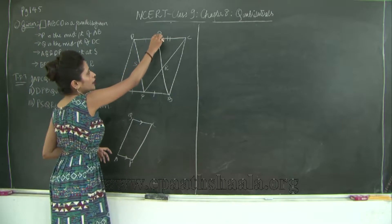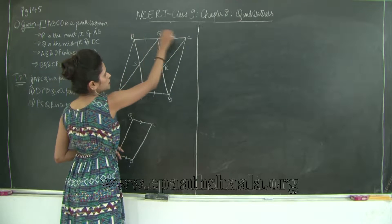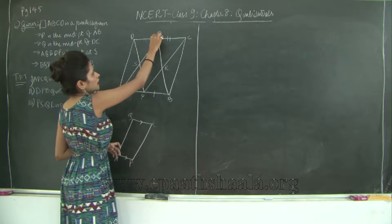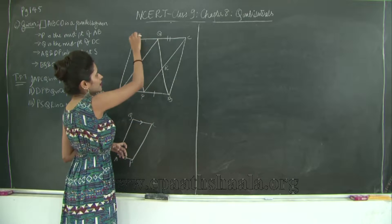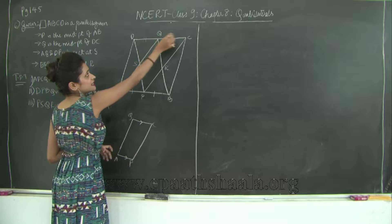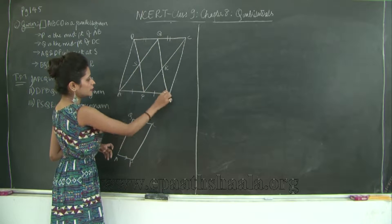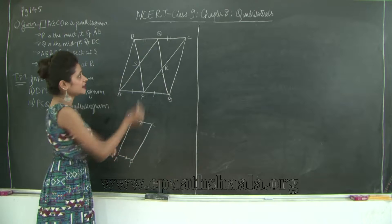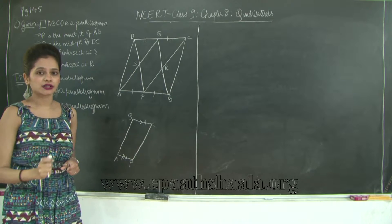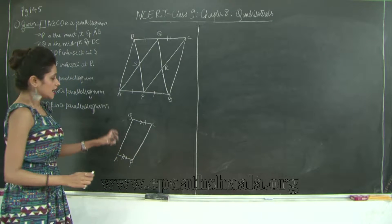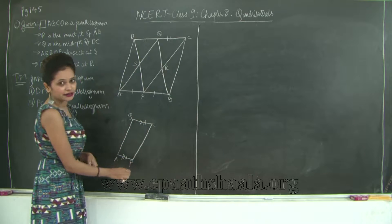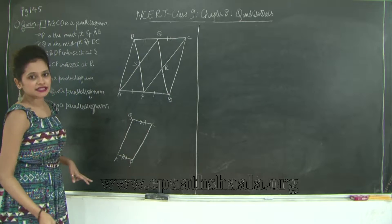Also, DC equals AB because ABCD is a parallelogram, meaning opposite sides are equal. Therefore, half of DC equals half of AB. Half of DC is QC and half of AB is AP — since Q is the midpoint of DC and P is the midpoint of AB. Therefore QC is also equal to AP. Using Theorem 8.8, which states that a quadrilateral is a parallelogram if a pair of opposite sides are equal and parallel, therefore quadrilateral APCQ is a parallelogram.